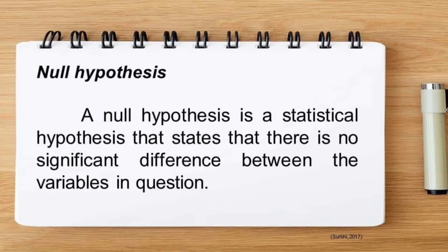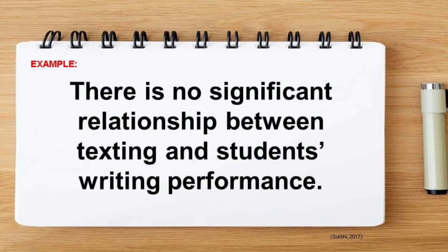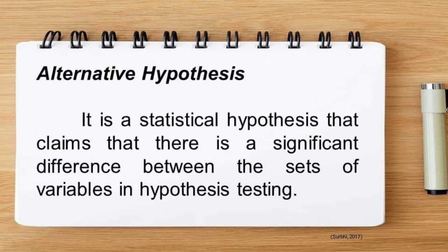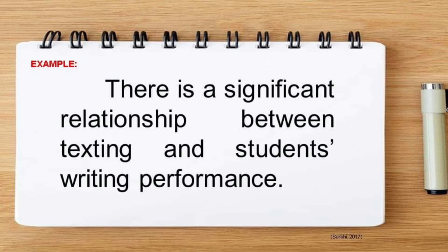A null hypothesis is a statistical hypothesis that states there is no significant difference between the variables in question. It is always stated in a negative manner, and H0 is a common symbol for it. For example: there is no significant relationship between texting and students' writing performance. An alternative hypothesis claims that there is a significant difference between the sets of variables in hypothesis testing. It is typically abbreviated as H1. For example: there is a significant relationship between texting and students' writing performance.